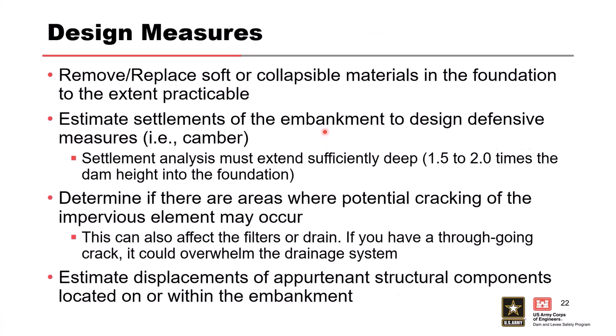For design measures: remove and replace any real outlier materials if you see them. Sometimes you can't remove everything, so consider increasing the thickness of filters and drains to account for settlements. During the design phase, determine where you might have potential cracking. With risk-informed design, look at whether there's an area where you might get a through-going crack, and determine what you can do in your design to mitigate against that so it doesn't emerge as a potential failure mode after construction.